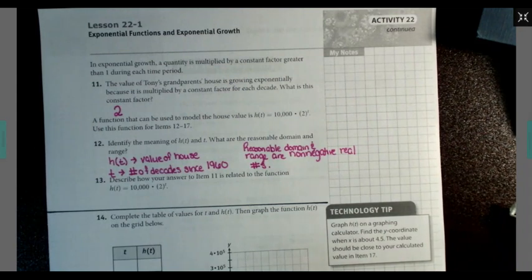It doesn't make sense for us to look at the value of the house before the house was purchased in 1960. And it doesn't make sense for the value of the house to be negative.